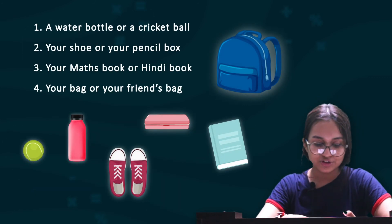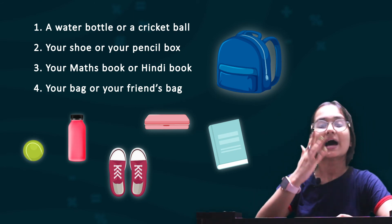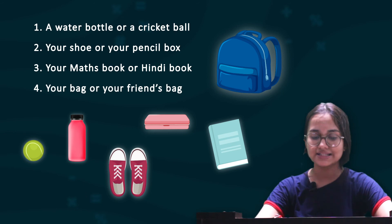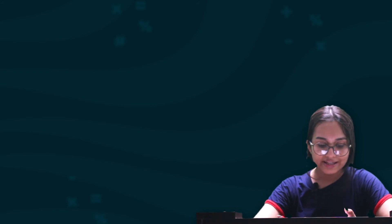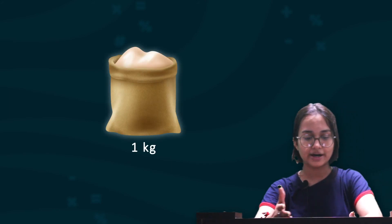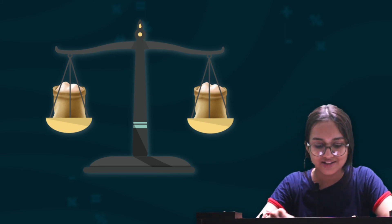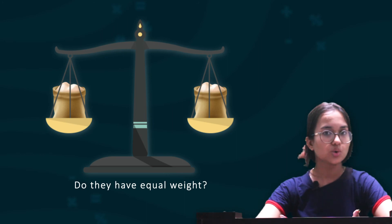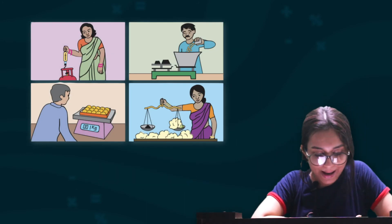Next, there are some items given and you need to compare which one is heavier and which one is lighter — do this on your own. After this, we have 1 kg of mud or sand divided equally into two parts; use the balance to check if both parts have equal weight. This is an activity we all need to do.